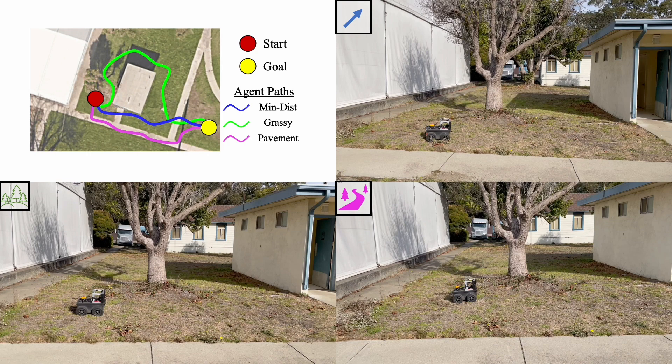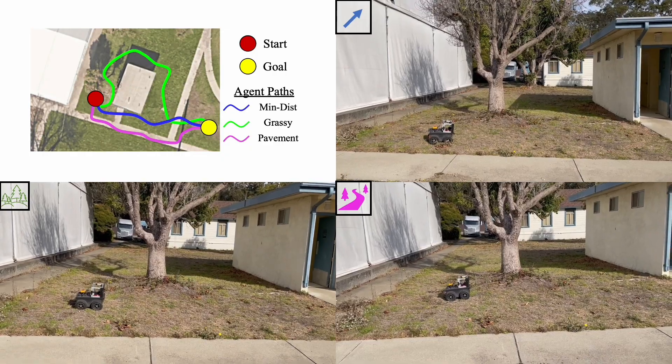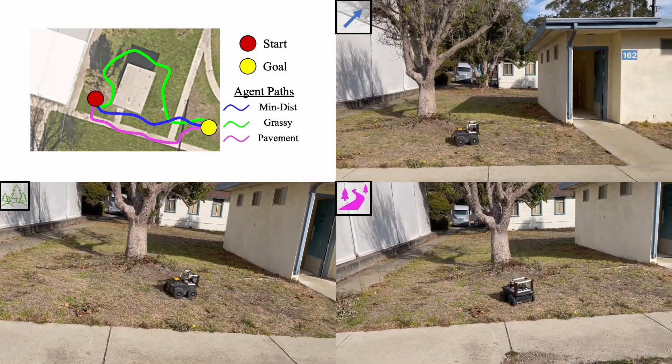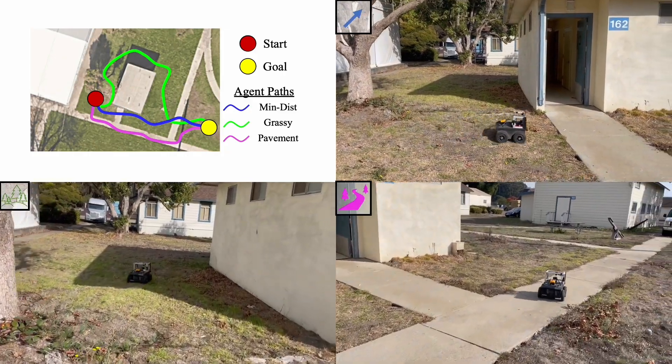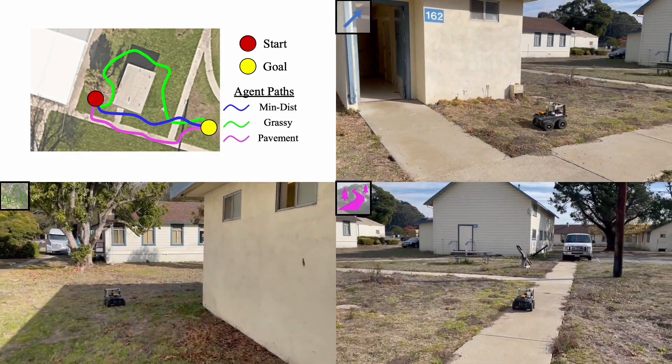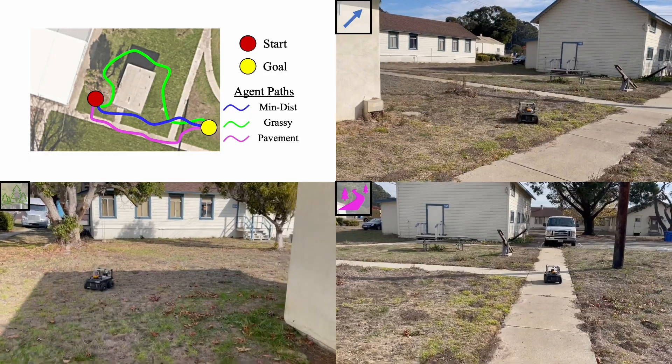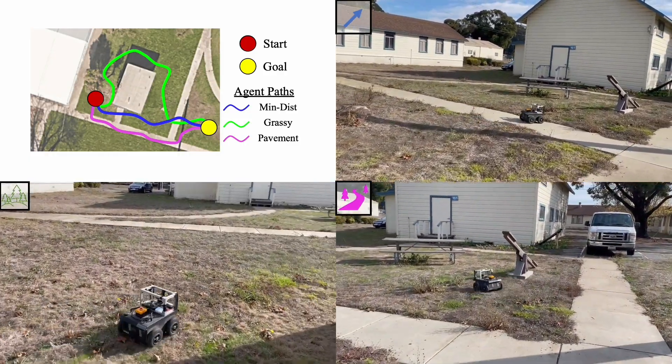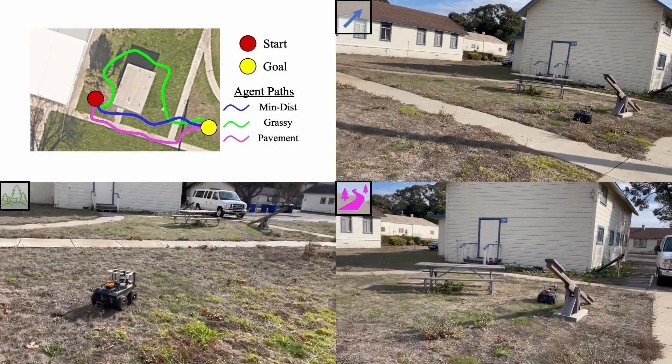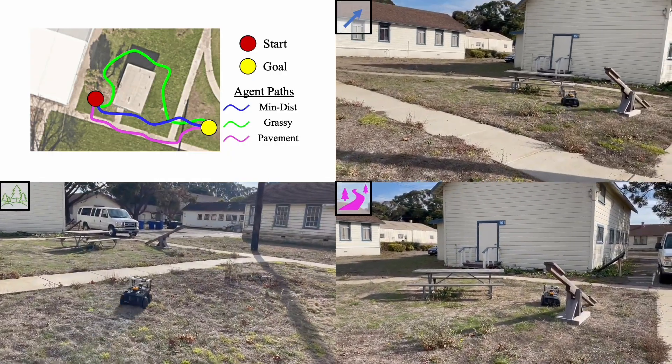Let's look at another example of the same policies in another environment, now from a third-person view. The minimum distance policy is at the top right, the grassy policy is at the bottom left, and the pavement policy is at the bottom right. The difference in behavior is very evident in this case, where the grassy policy takes a massive detour in order to just stay on the grass for as long as possible, whereas the pavement policy takes a rather straight path while staying on the pavement direct to the goal.